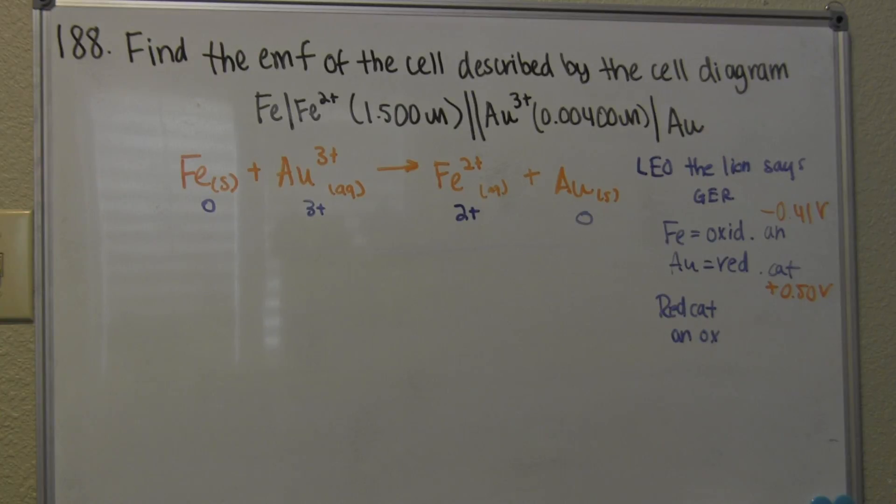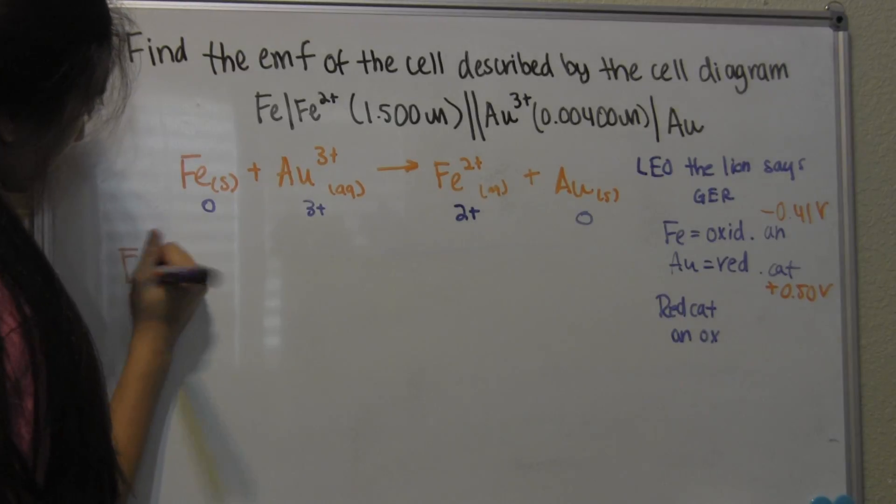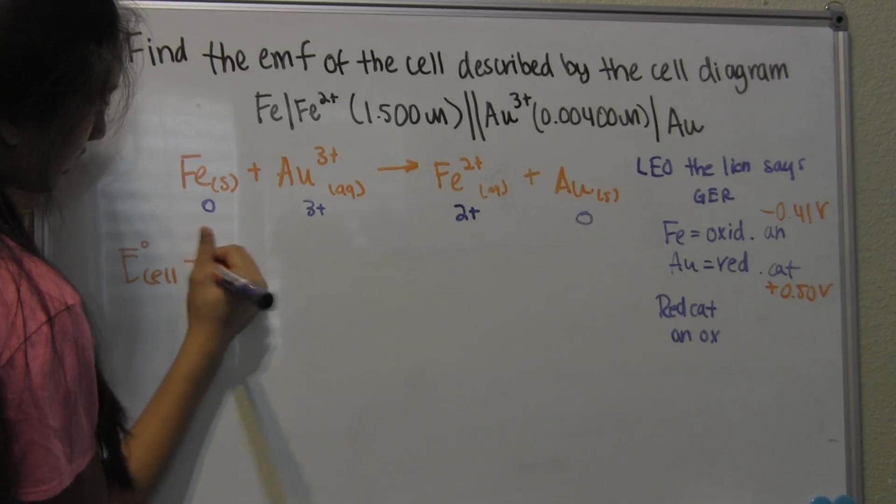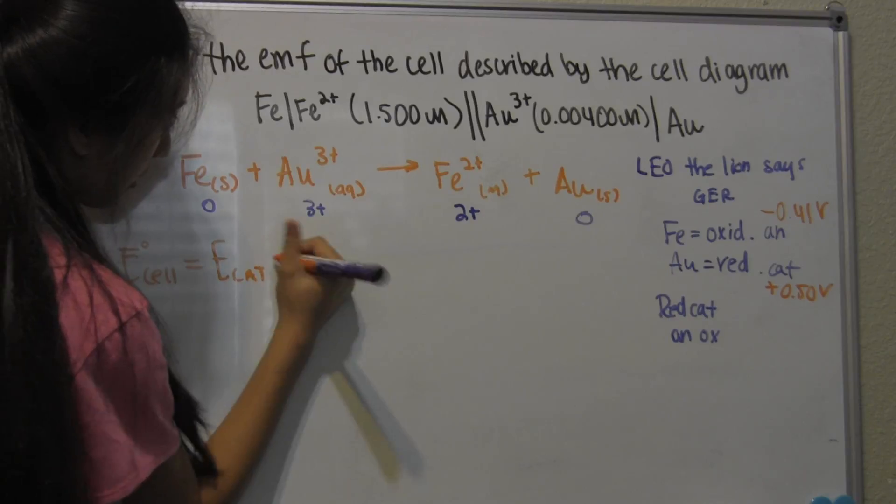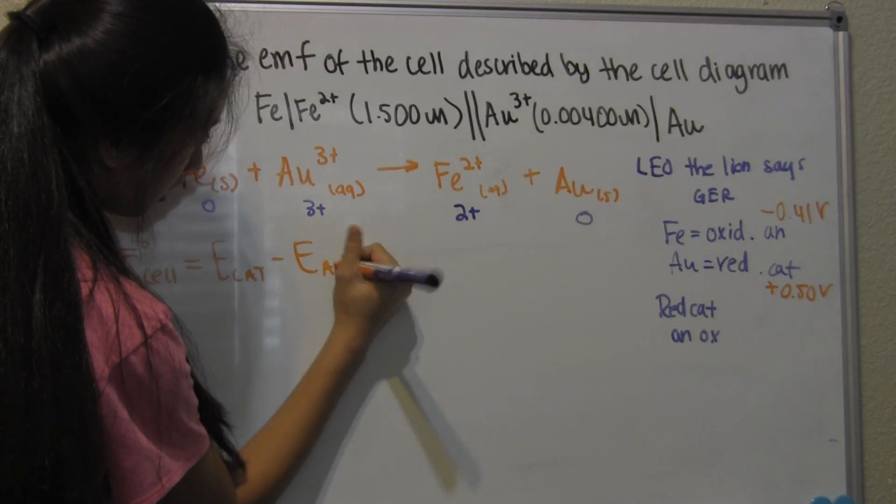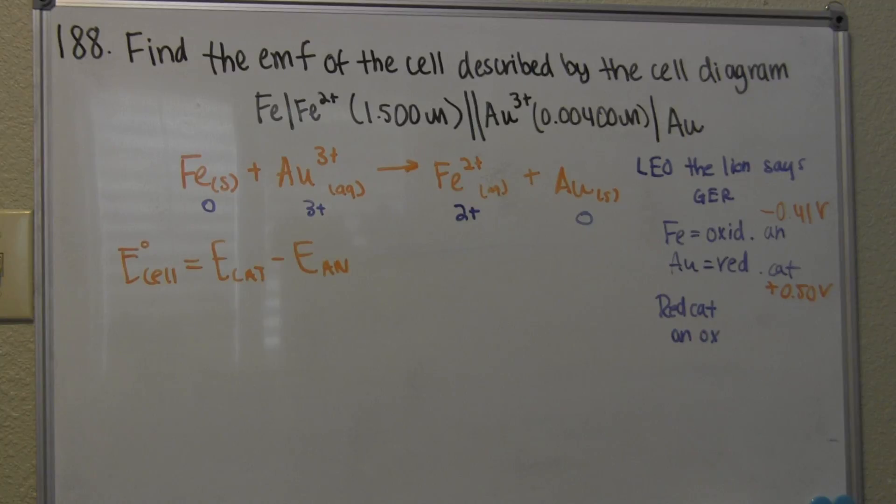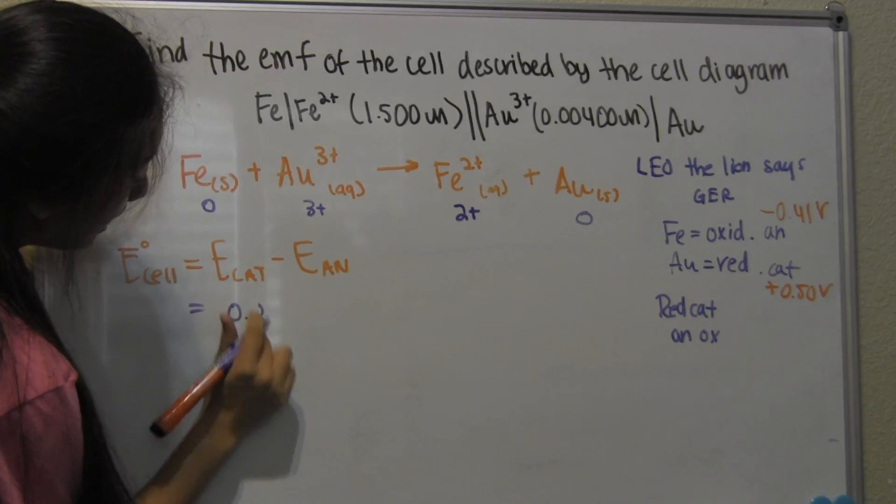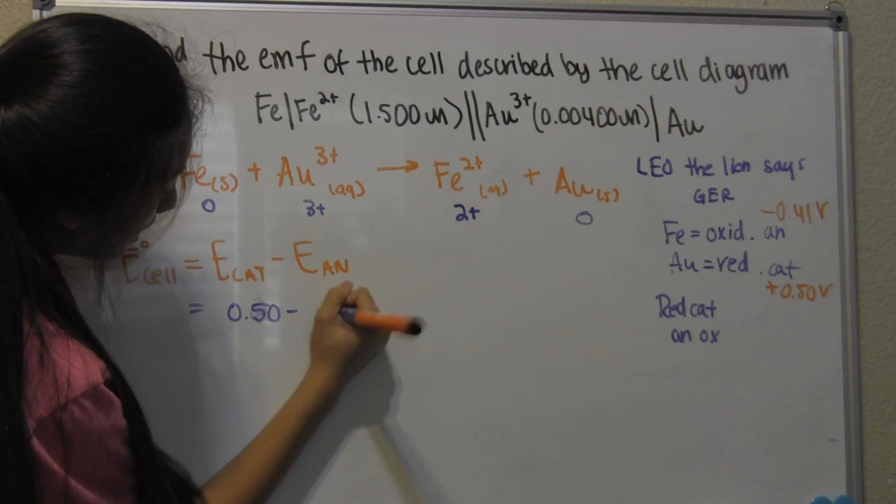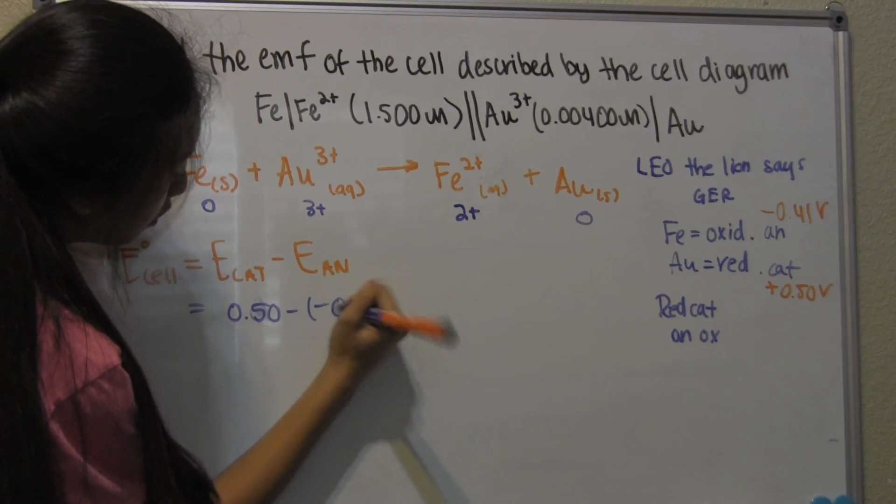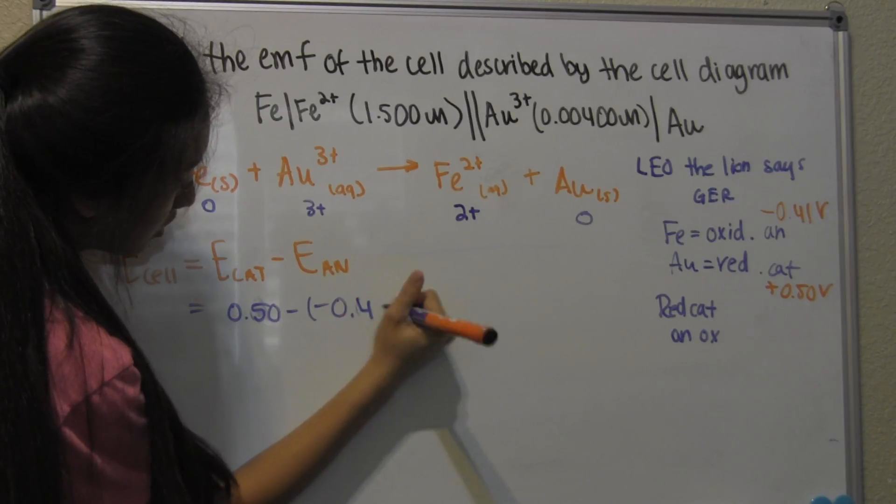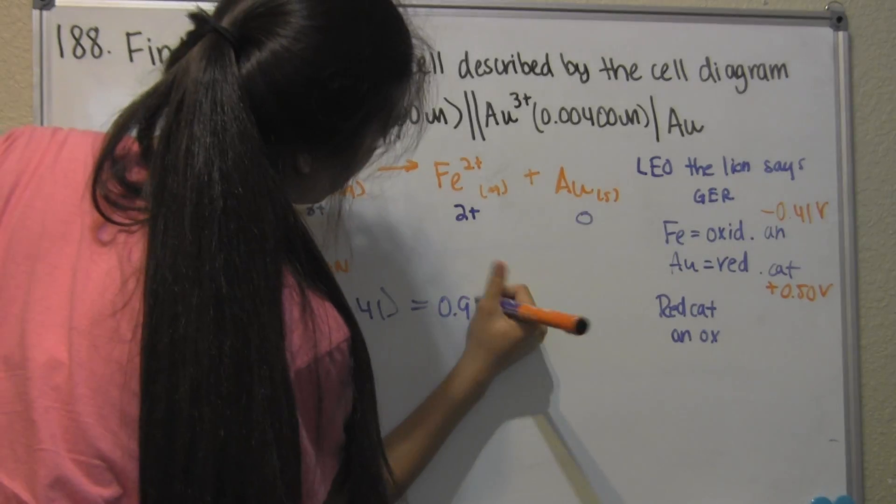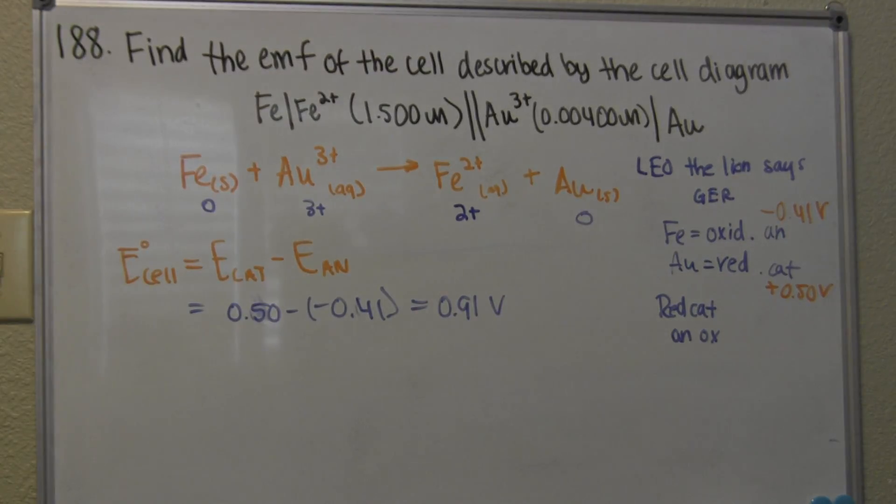From here we can use the E-cell equation, which is E of the cell equals E cathode minus E anode. If you plug in these values according to the cathode and anode, it'll equal 0.50 minus negative 0.41. And that'll equal 0.91 volts. That's E of the cell.